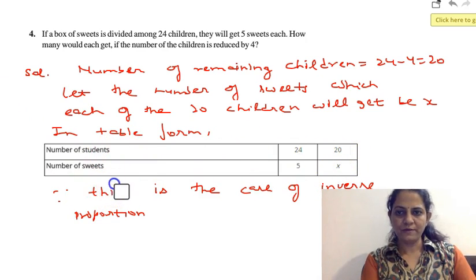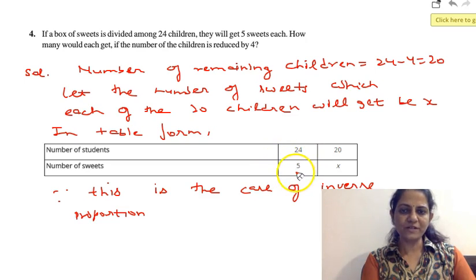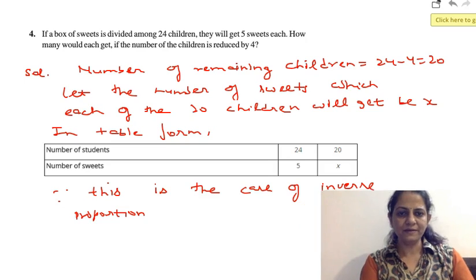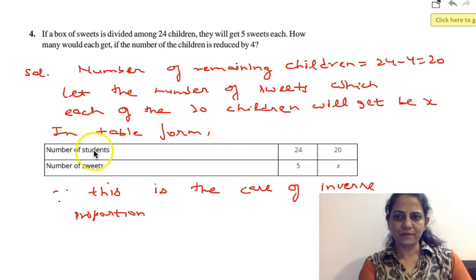We can understand that if the number of students are more, number of sweets per child will be less. If the number of students are less, number of sweets per child will be more. It means that the number of sweets and number of students are in inverse proportion. So this is the case of inverse proportion.